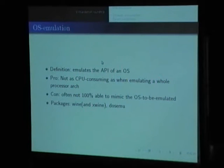The next flavor is operating system emulation. This means software has to emulate the API of a specific operating system. This is not as CPU-consuming as emulating a full CPU. The bad thing is that it's not easy to emulate a full API of another OS — for example, Wine for Windows requires reimplementing all those Windows DLLs.